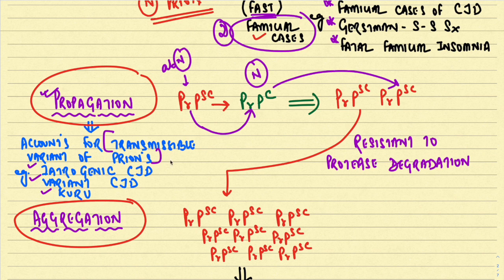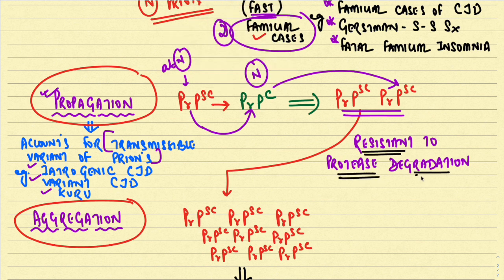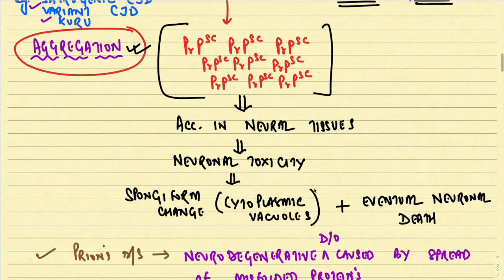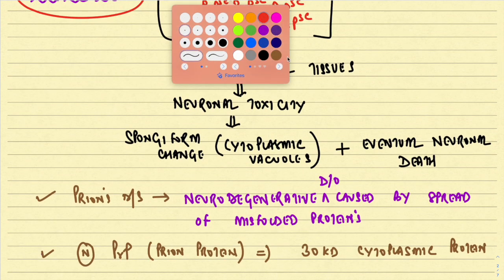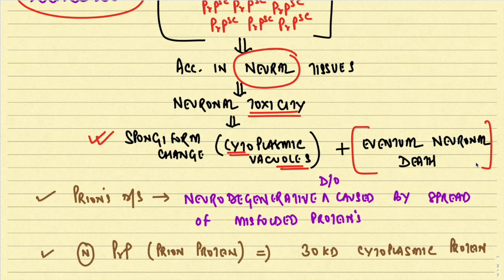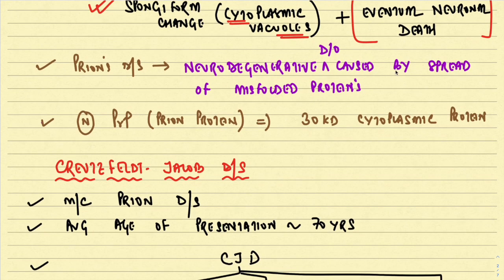Once the abnormal proteins are formed, they are classically resistant to protease degradation. They aggregate and form insoluble aggregates resistant to degradation. These aggregates accumulate in neural tissue, leading to neuronal toxicity in the form of spongiform change — the presence of cytoplasmic vacuoles of various sizes within the neuropil as well as within the cell body of the neurons. Ultimately, this leads to neuronal cell death.